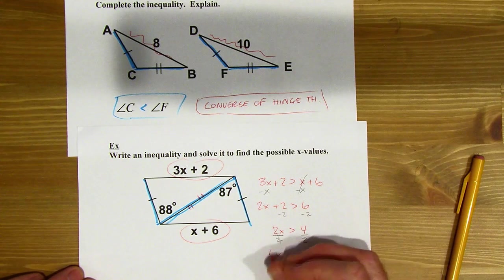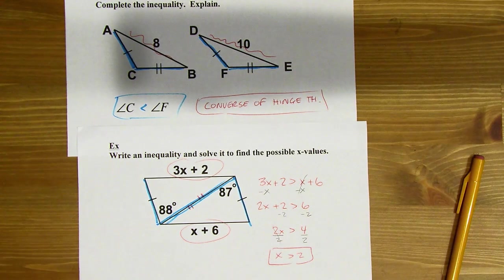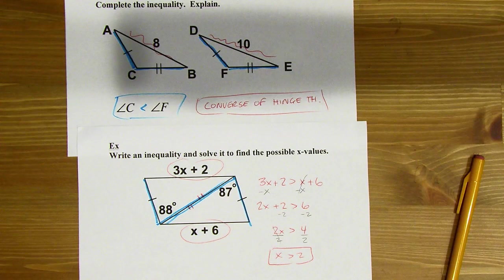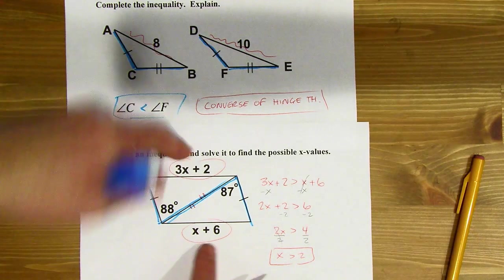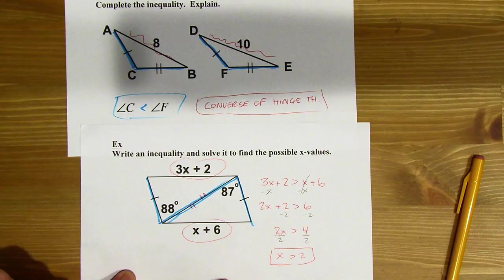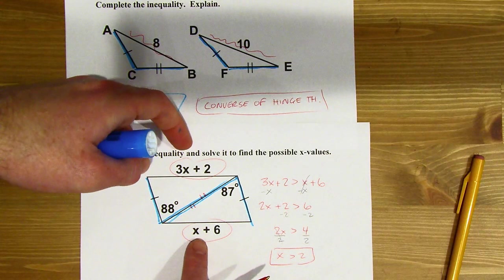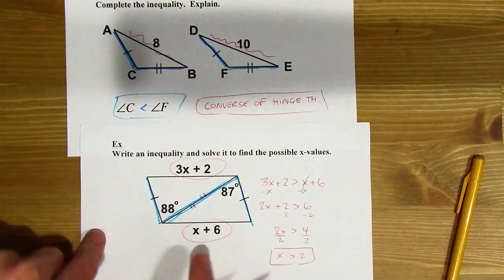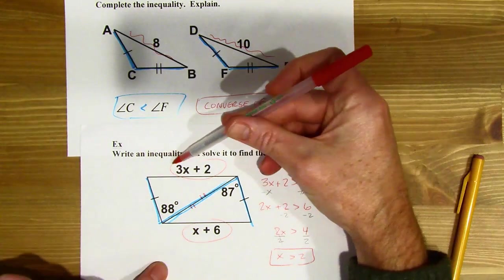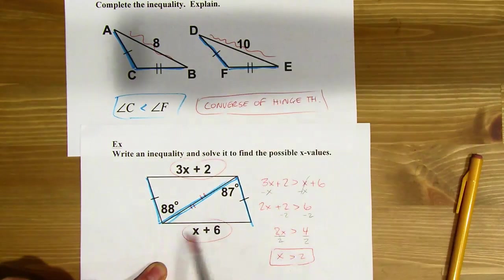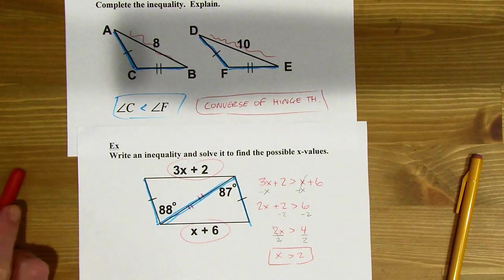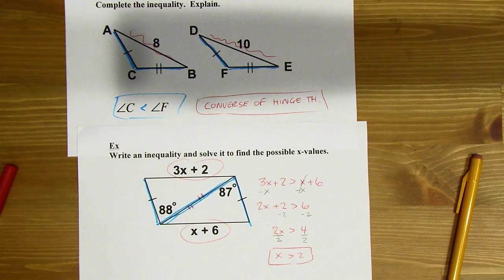And now I can see, hey, my possible X values, X can be anything greater than 2. And you could actually test it out. So 2 itself would not work. But if I tried 2.1 or 3 or 4 or 5 or 6, anything else should make sense where we get an X value where this line segment ends up being greater than this one. And that's the end of the section. I will see you next time.